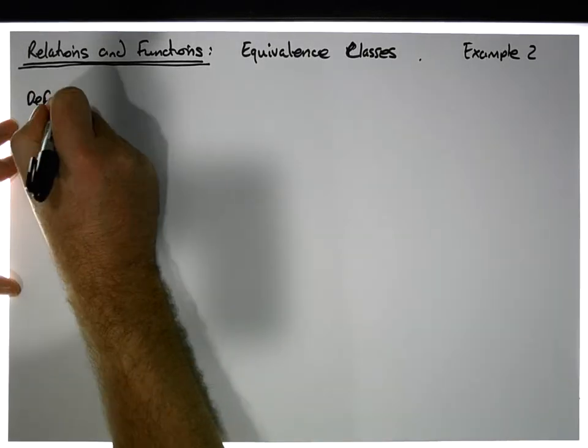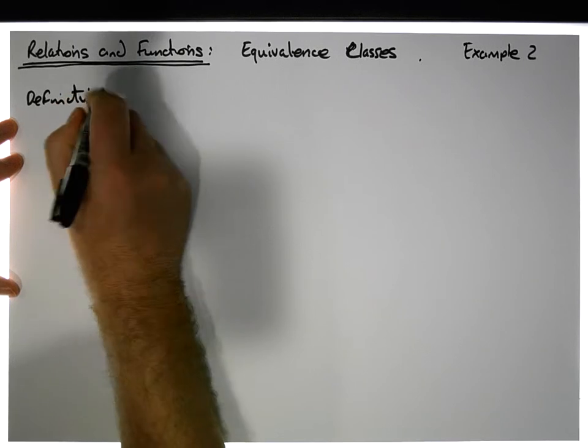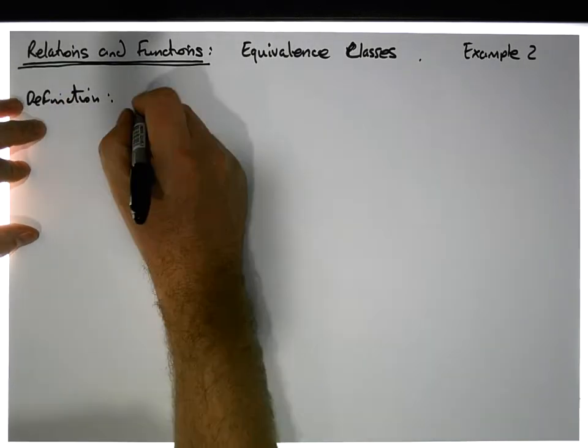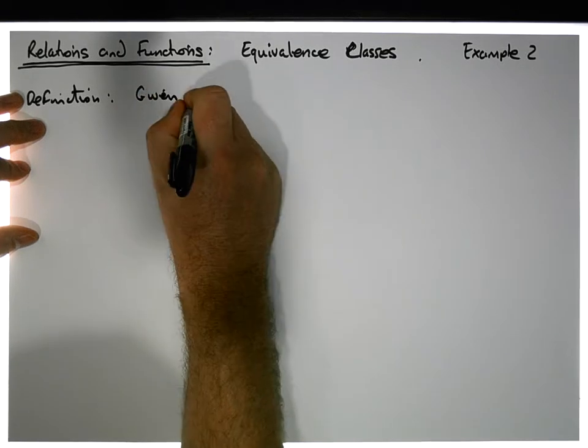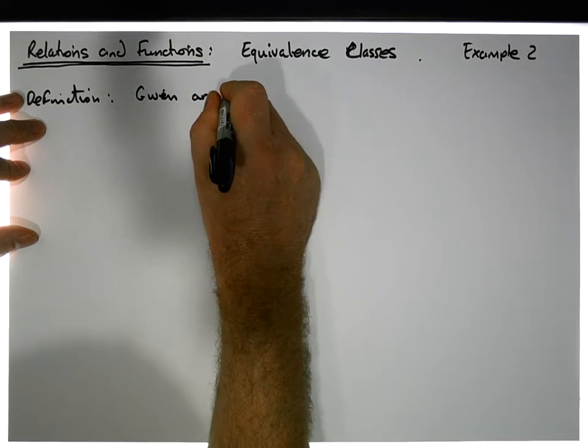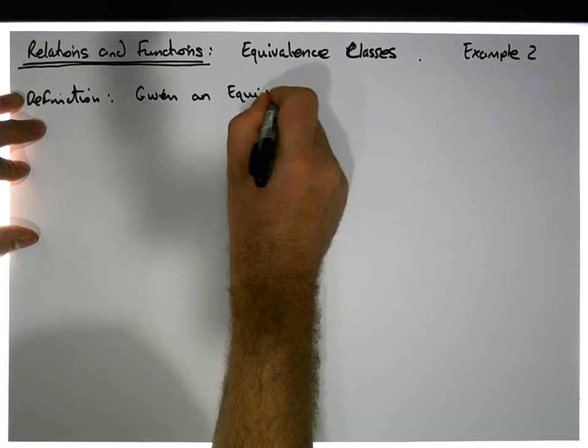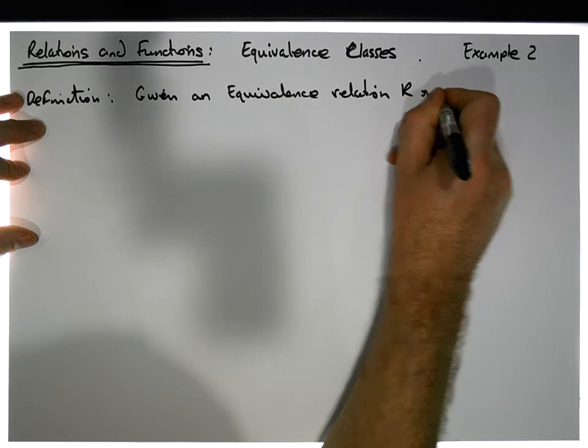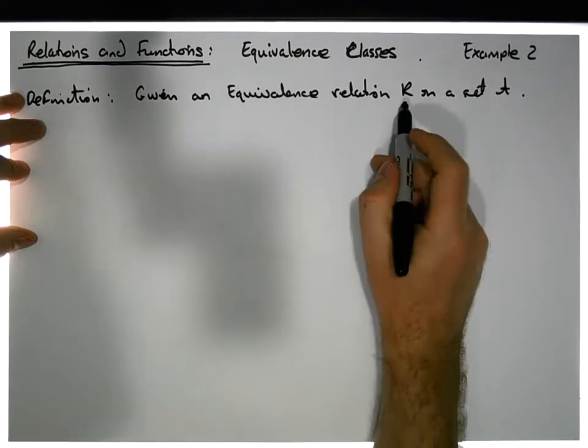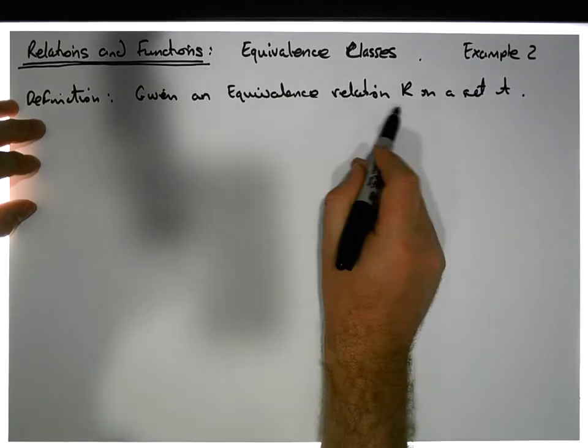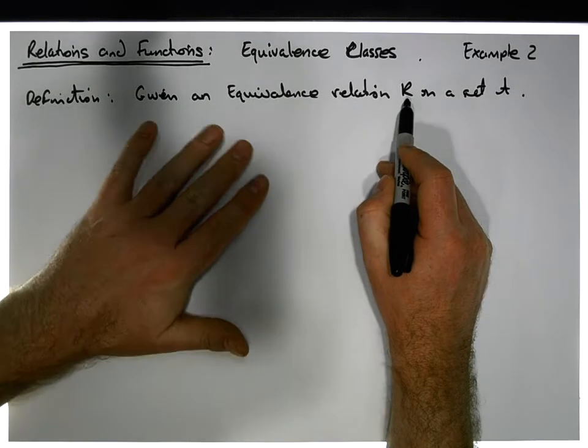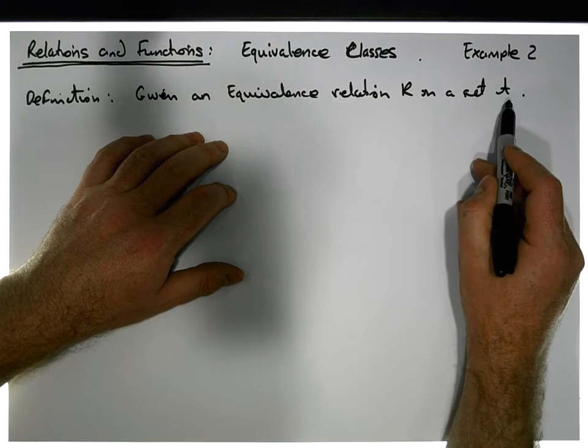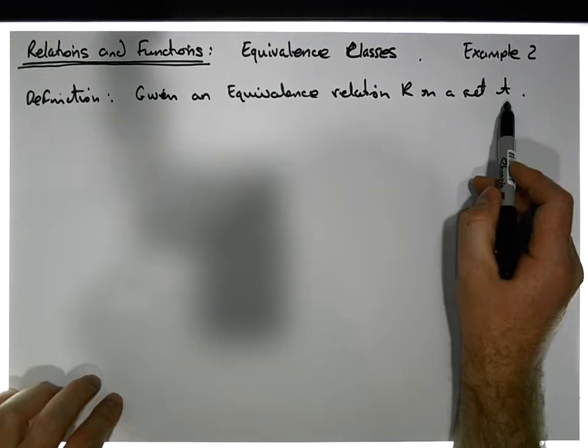So the definition that we actually have, so our definition, we actually need an equivalence relation in order to generate these equivalence classes. So let's say we have one, so given an equivalence relation R on a set A. So what we know now about this relation is it's an equivalence relation. What does that mean? It means it's reflexive, it's symmetric, and it's transitive. And more importantly, it's a relation, so it's a subset of A cross A.